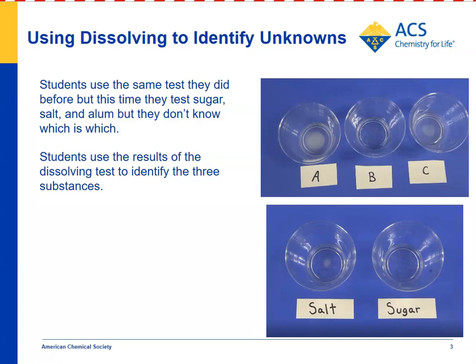There's a small amount left over in C, just like salt was in the previous experiment, but there's a lot left over in A. So A is probably the unknown — the one that doesn't agree with what they saw before. And it's true: A is alum, which is less soluble in water than either sugar or salt.